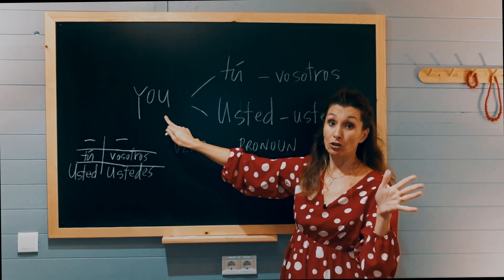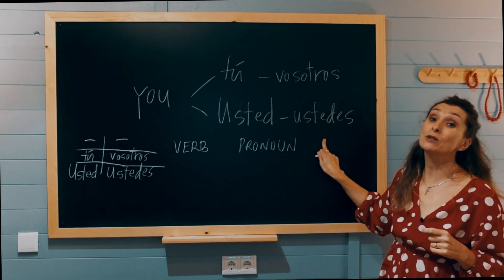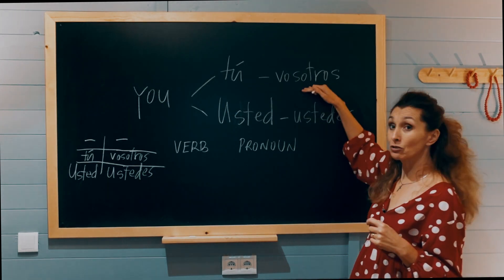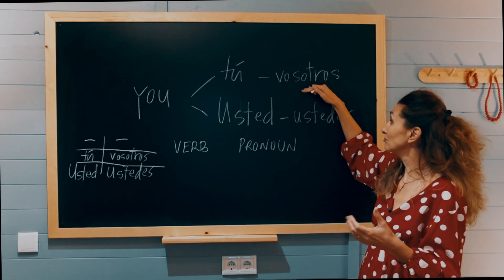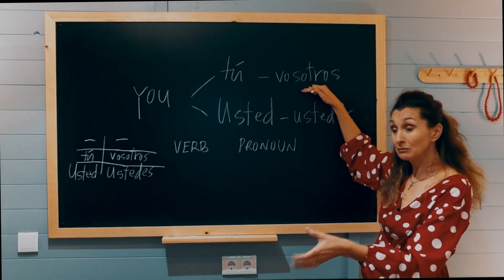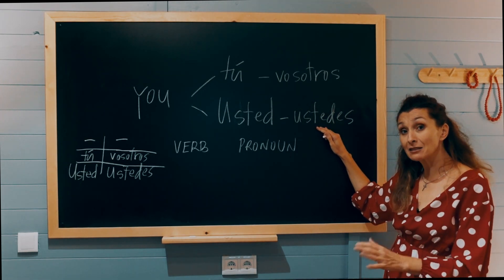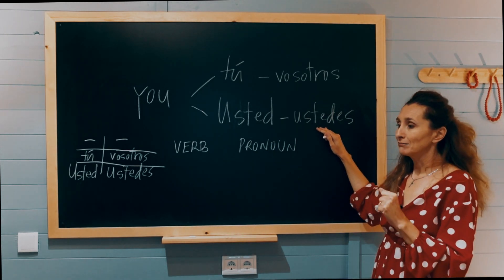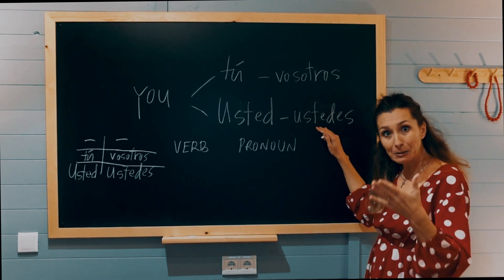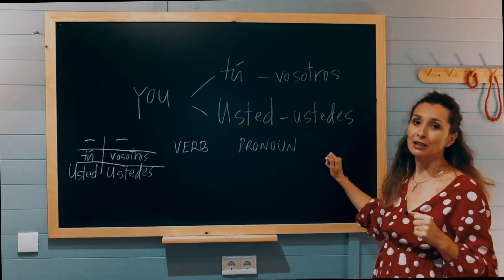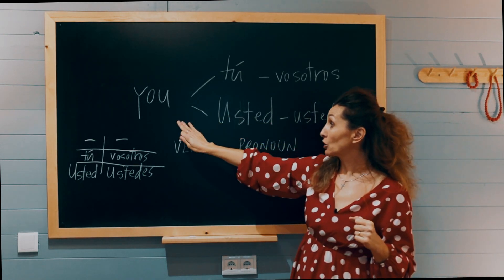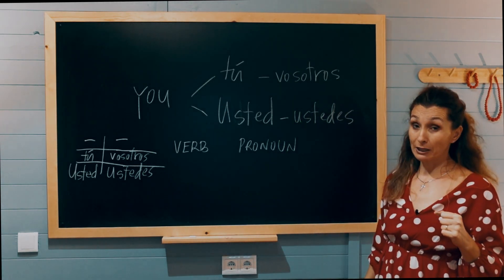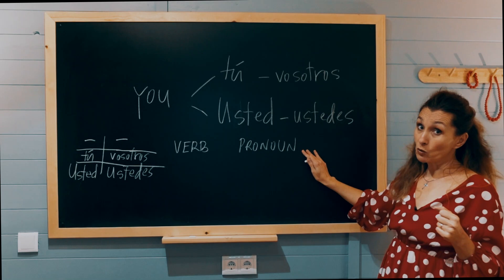So the English 'you' can be translated in four different ways in Spanish. You need to know if it's these two — TÚ and VOSOTROS — if you're close, friendly, informal, or if it's these two — USTED and USTEDES — if there's maybe some distance, maybe you don't know each other for very long, or maybe you need to show some respect. The English 'you' has these four different forms, which means you will have to use four different forms of the verb. The same will happen with the pronoun.